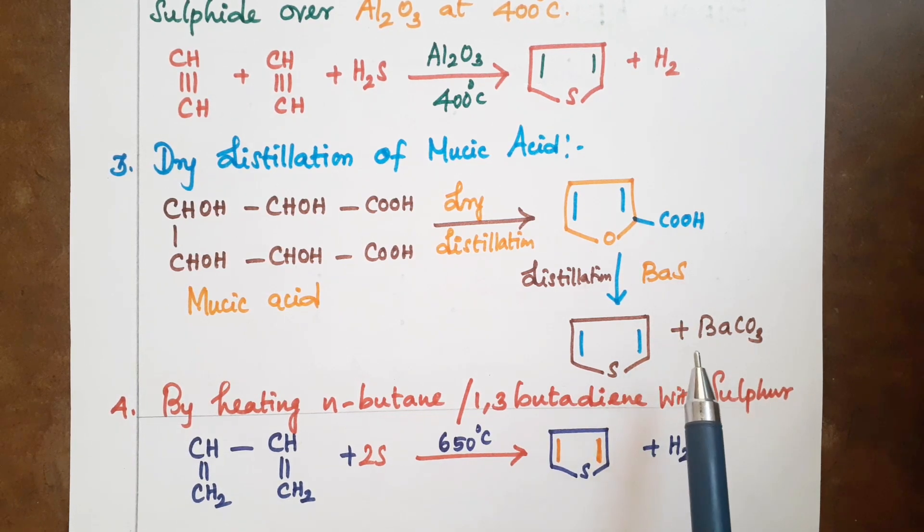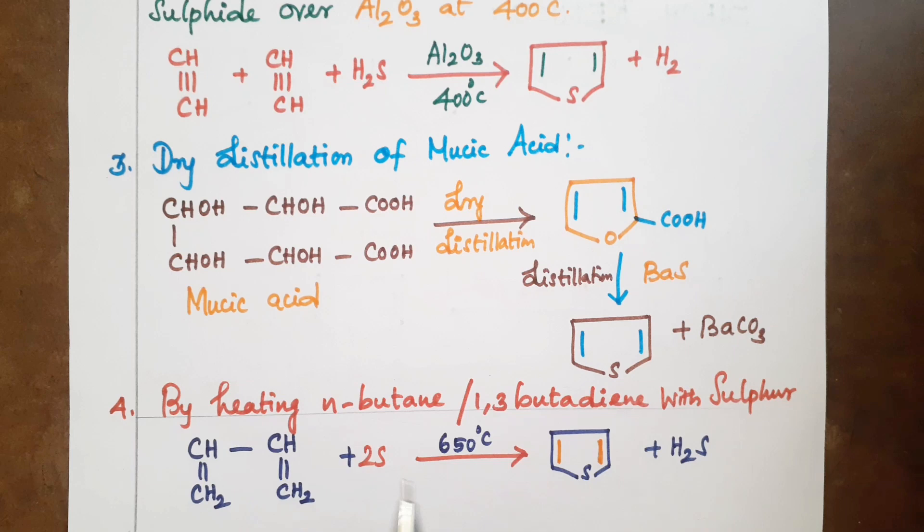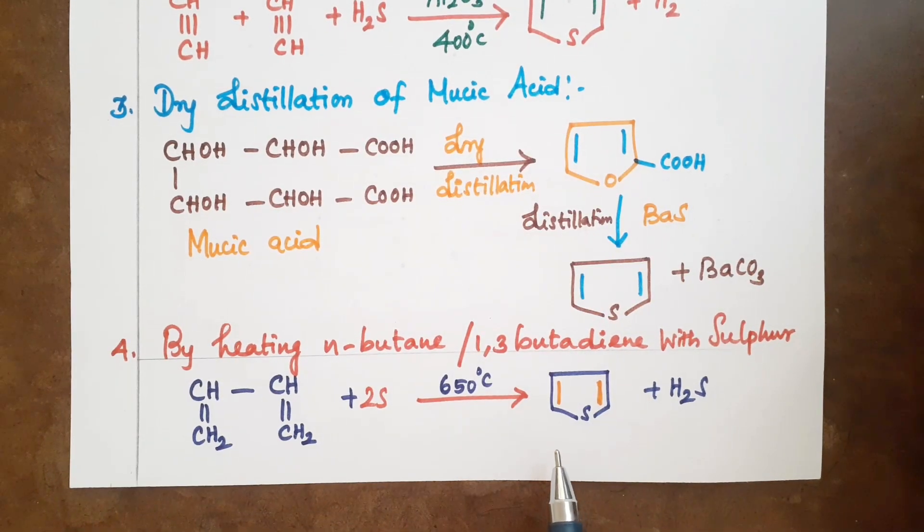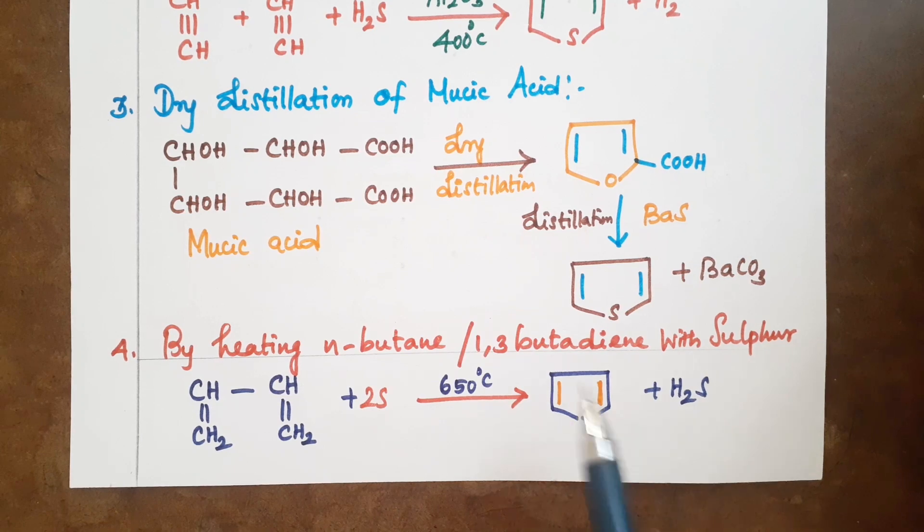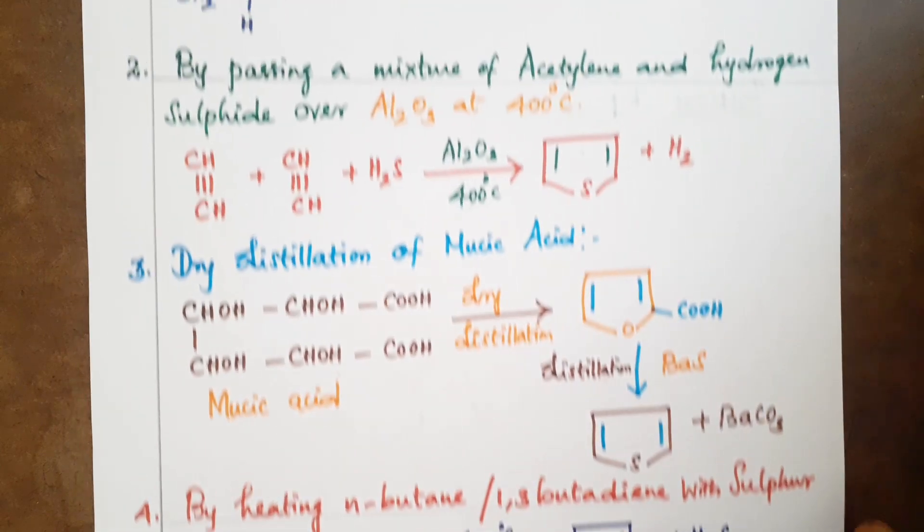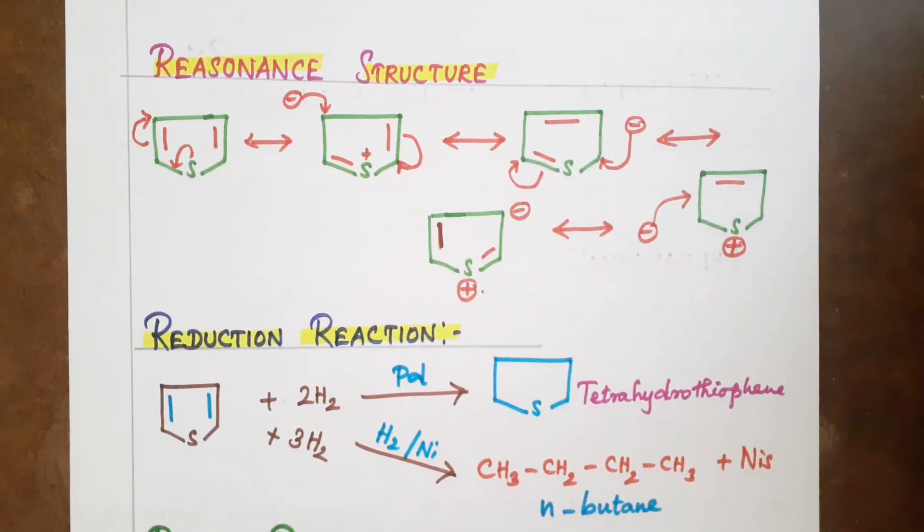This produces thiophene and hydrogen sulfide. Fourth preparation is by heating n-butane or 1,3-butadiene with sulfur powder. 1,3-butadiene or n-butane with sulfur powder produces thiophene. This is one of the preparations, the chemical process.